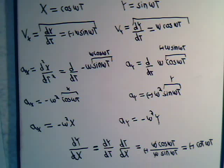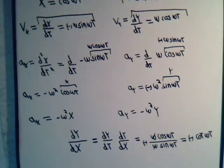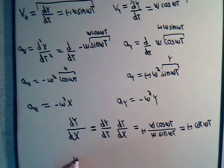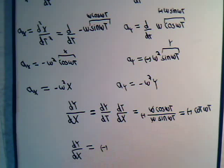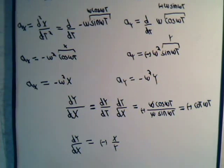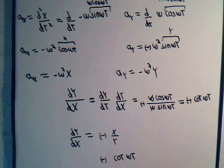We can also look at this further: the cosine of ωt is x and the sine of ωt is y, so we can say that dy/dx, which we determined by using the chain rule, is equal to minus x divided by y. Or we could say it is minus the cotangent of ωt keeping it in parametric form — either way is right of course.